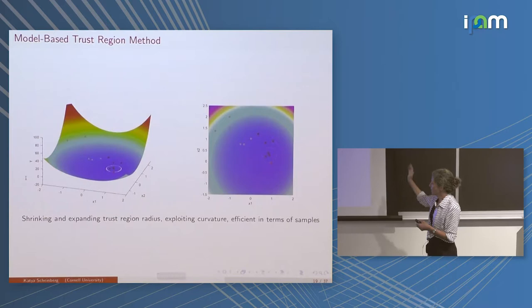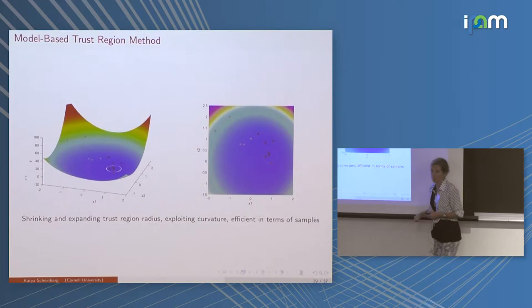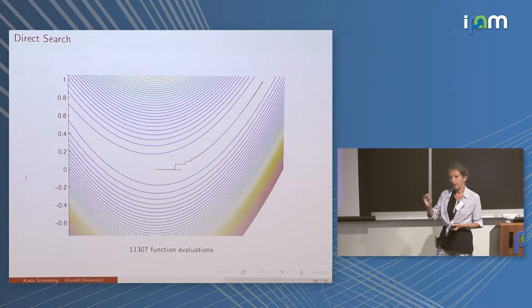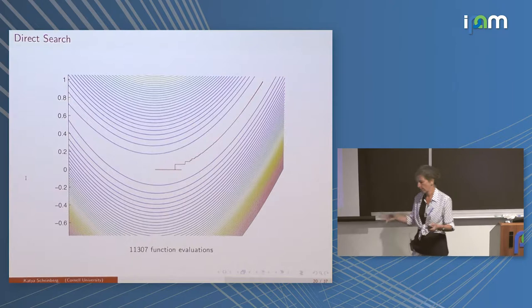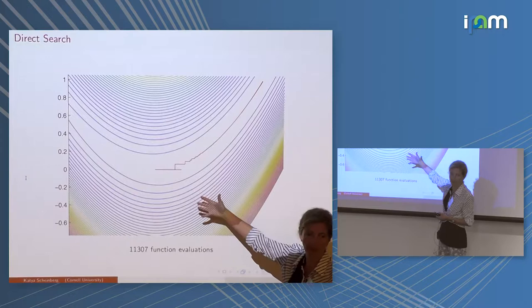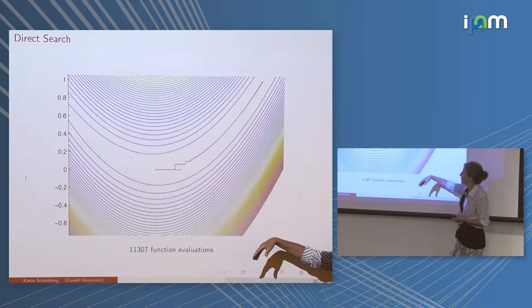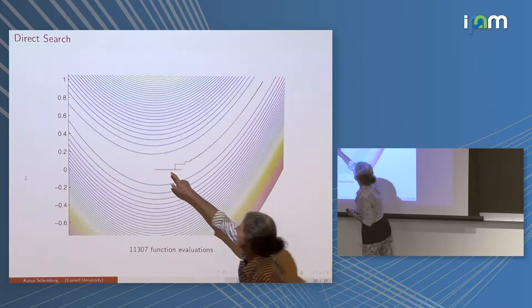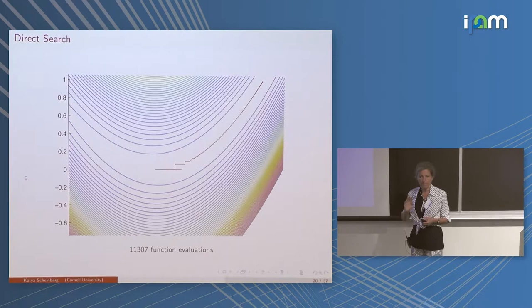Direct search is a very simple method that just tries north, south, east, west to collect some information about the function without modeling it. On this two-dimensional function — well known in the optimization community to make slow methods look particularly slow — it takes 11,000 function evaluations to converge from (0,0) to the optimum at (1,1) because it's just very slow.